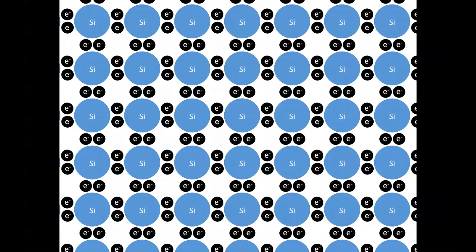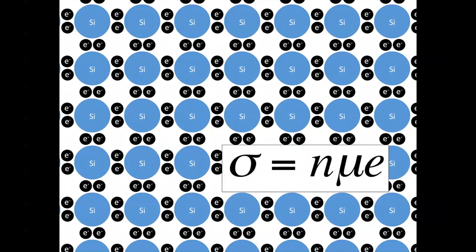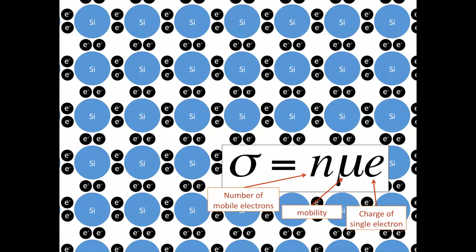Let's quantify this relationship between conductivity and mobile electrons. Conductivity is defined as n times mu times e. n is the number of free, or mobile, electrons. In this drawing of intrinsic silicon, all electrons are covalently bonded, so there are no mobile electrons, and n is zero. The symbol mu represents the mobility, a material parameter which describes how well the charge can move around in the material. e is simply the amount of charge that each mobile particle possesses, which in all of our cases is simply the charge of an electron.